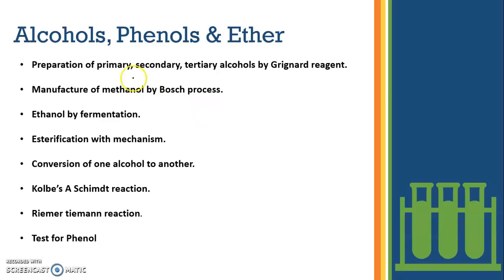Coming to the next chapter - alcohols, phenols and ethers. Preparation of primary, secondary, tertiary alcohols by Grignard reagent. Manufacture of methanol by Bosch process. Ethanol by fermentation. Esterification with mechanism. Conversion of one alcohol to another. Kolbe-Schmitt reaction. Reimer-Tiemann reaction. And test for phenol. All these topics I found are important for this year. Please don't leave them.